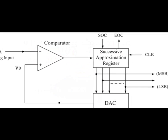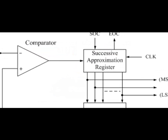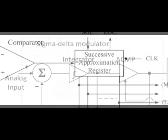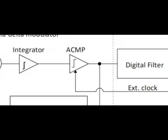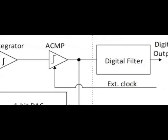There are various types of ADCs, including successive approximation ADCs, sigma-delta ADCs, and flash ADCs. Each type has its own advantages and is chosen based on the specific requirements of the application.